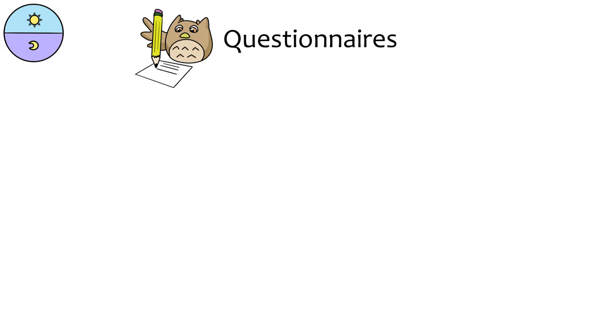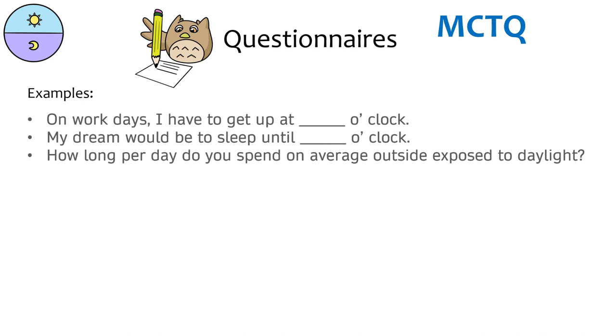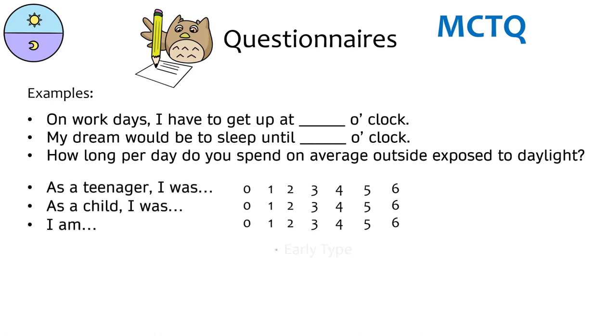Several different and unique chronotype assessment questionnaires have been developed to accurately assess circadian or sleep disruption. The Munich Chronotype Questionnaire, or MCTQ, aims to determine chronotype with questions regarding the individual's sleep. It also provides other subjective data as individuals are able to rate their own chronotype throughout their different life stages, as well as describe their ideal bedtime and sleep duration.